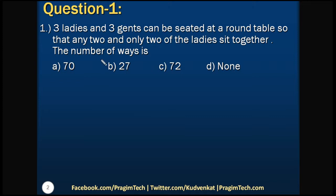Here is Question 1: 3 ladies and 3 gents can be seated at a round table so that any 2 and only 2 of the ladies sit together. We have to calculate how many different ways we can arrange 3 ladies and 3 gents around a circular table with the condition that exactly 2 ladies sit together.